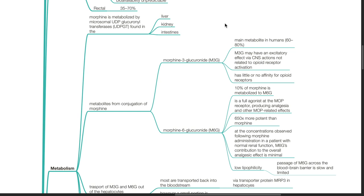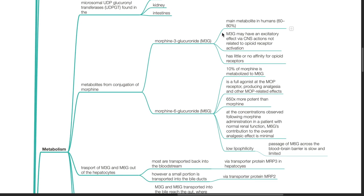M3G may have an excitatory effect via CNS actions not related to opioid receptor activation. M3G has little or no affinity for opioid receptors. M6G is a full agonist at the MOP receptor producing analgesia and other MOP related effects. It is 650 times more potent than morphine. At the concentrations observed following morphine administration in a patient with normal renal function, M6G's contribution to the overall analgesic effect is minimal.